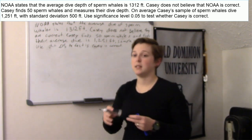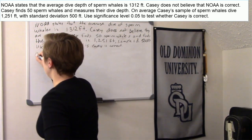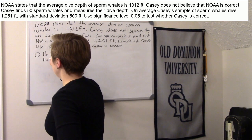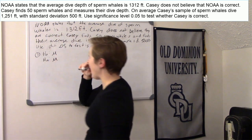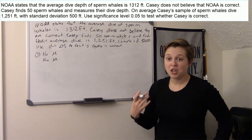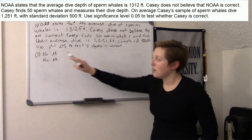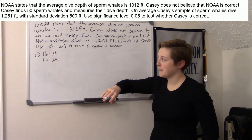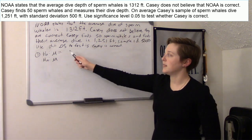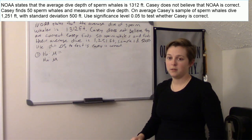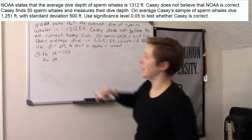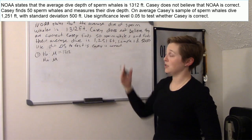Our hypothesis testing will have the same five steps as the previous example. Step one: state your null and alternative hypothesis. Since we're testing averages — the average dive of a sperm whale — we have mu. The null always has equal to. It's going to equal 1,312, because that's what NOAA says is the population average dive.